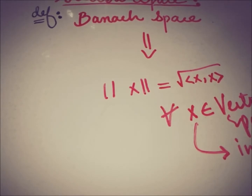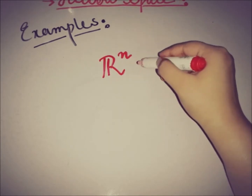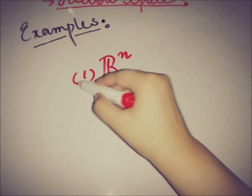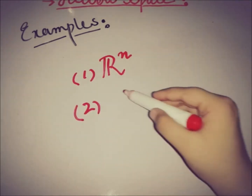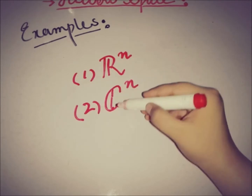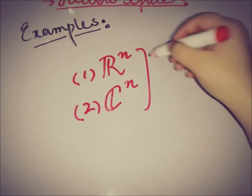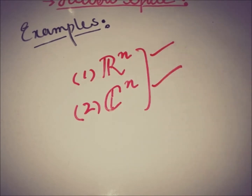Moving toward the examples. The most common example of a Hilbert space is the real space R^n, and that is the first example. The second example is the complex space C^n, which is also very well familiar. I am not going into the proof of how these are examples of Hilbert spaces, as this is obvious.